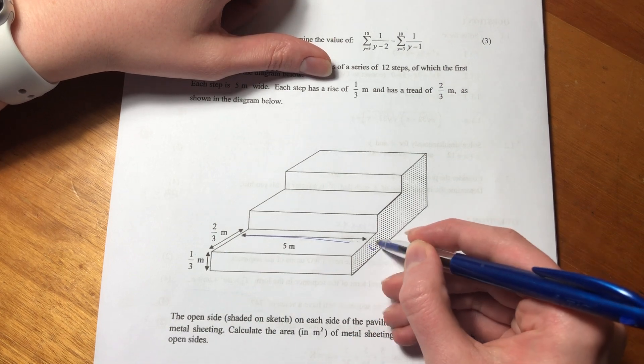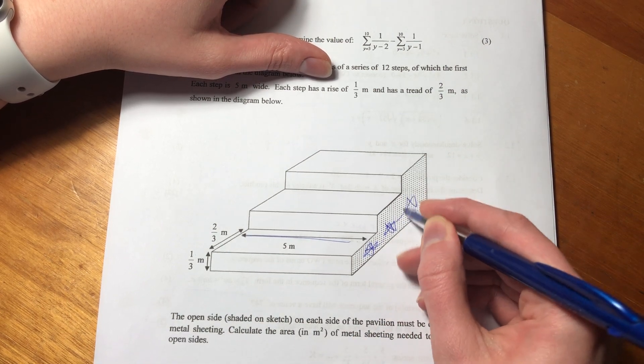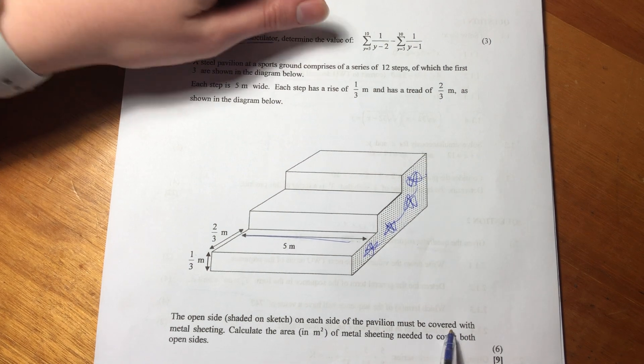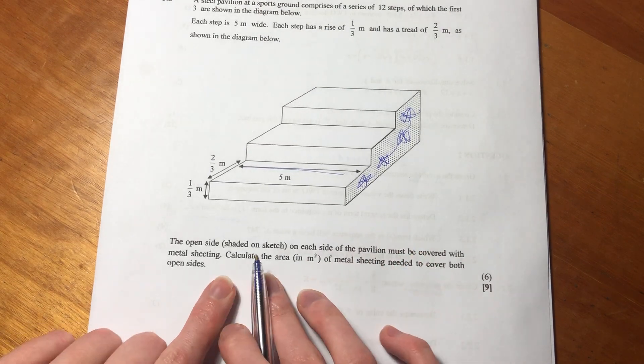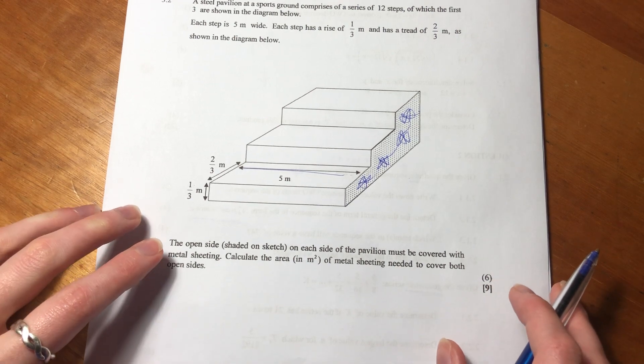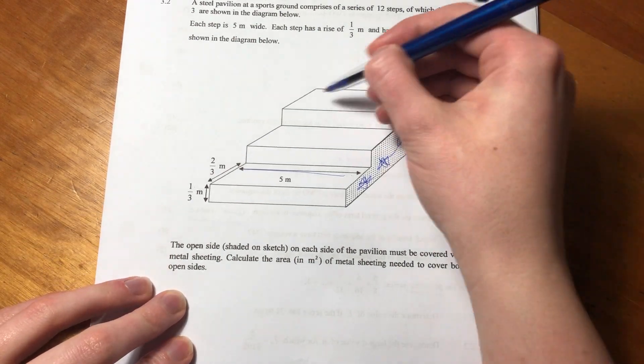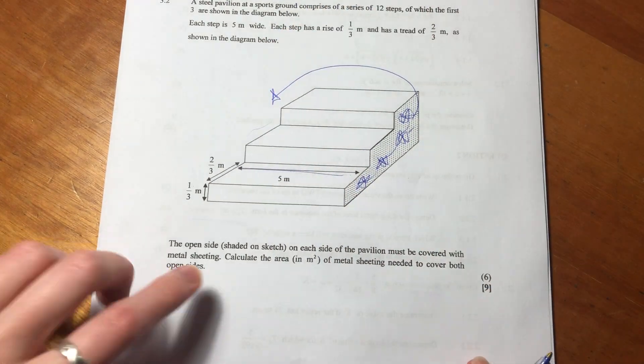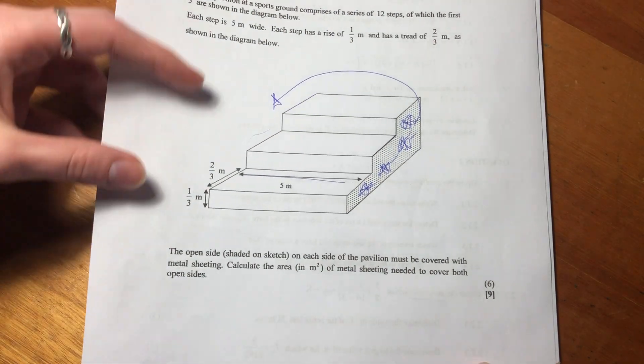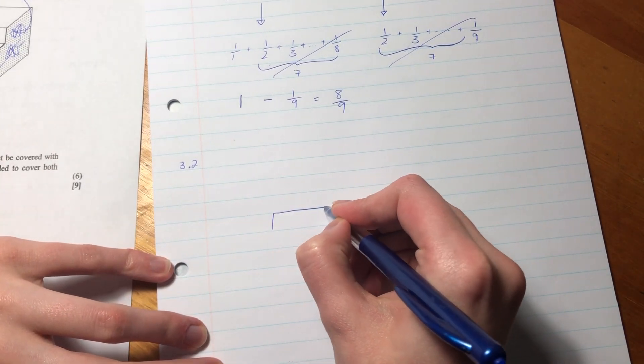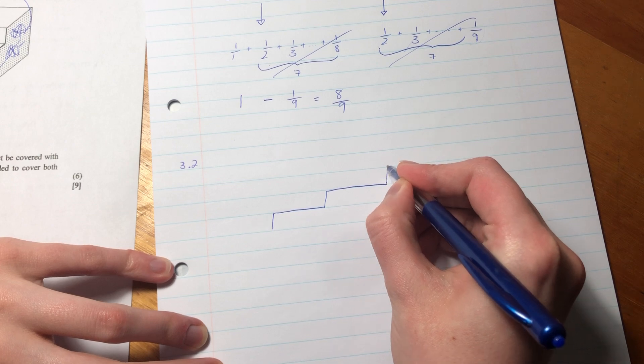The open side of the pavilion must be covered with metal sheeting. Calculate the area needed to cover both sides. We know this side will be repeated on the other side. Let's focus on one side first. I'm going to draw it because it's easier to visualize.